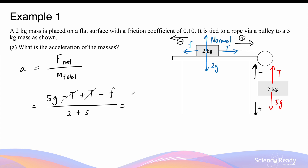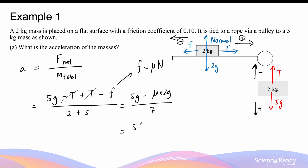In the numerator, this becomes 5g minus the friction. The friction force equals the coefficient multiplied by the normal force, and the normal force equals the weight of the 2kg mass. So we subtract μ × 2g, divided by 7. This gives us (5 × 9.8 − 0.1 × 2 × 9.8) ÷ 7, and we get the same answer as before: 6.72 meters per second squared.